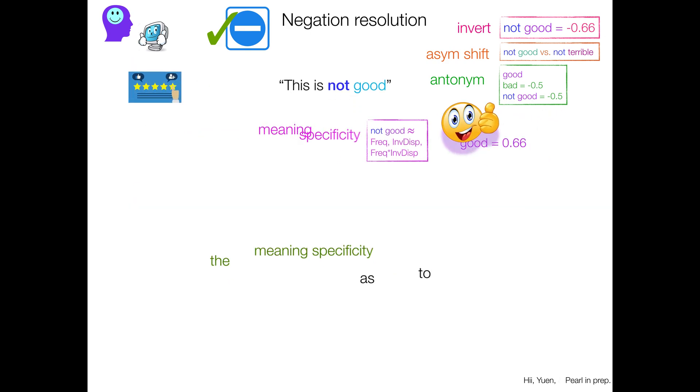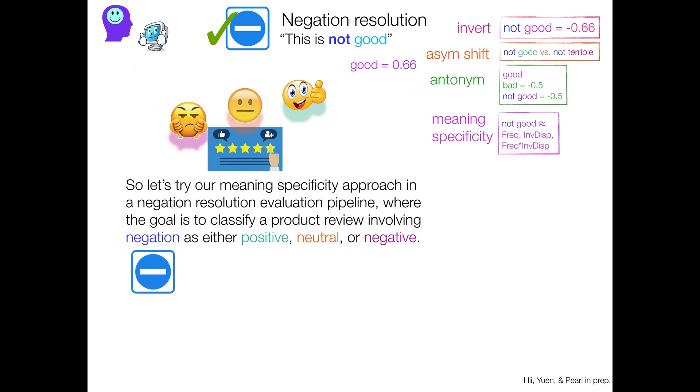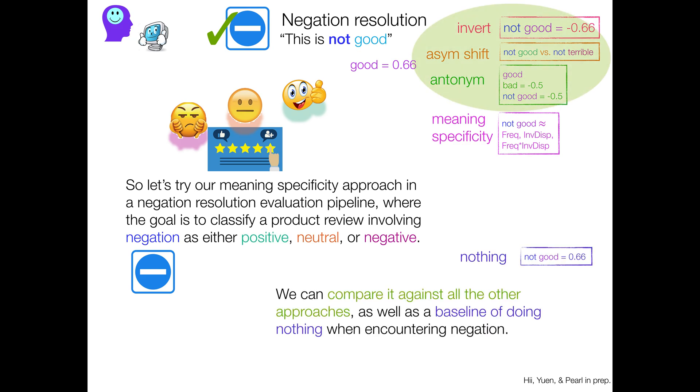So therefore, let's try our meaning specificity approach in an actual pipeline that involves negation resolution, where the goal is to classify a product review involving negation as either positive, neutral, or negative. And we can compare it against all the other approaches I talked about, inversion, asymmetrical shift in the antonym dictionary approach, as well as a baseline of literally doing nothing when encountering negation. Like, it doesn't get much worse than that. You just ignore it.